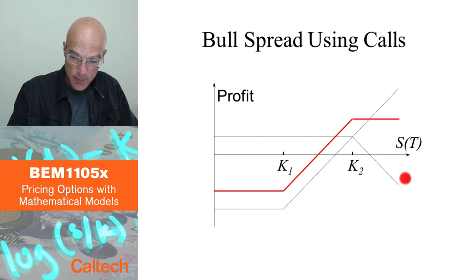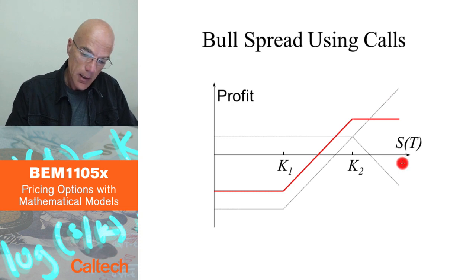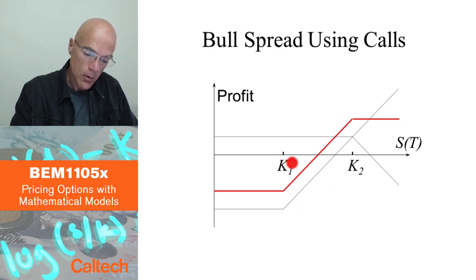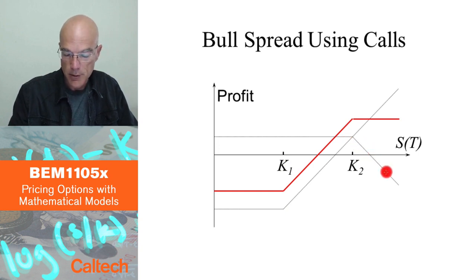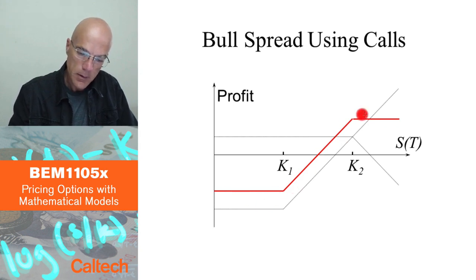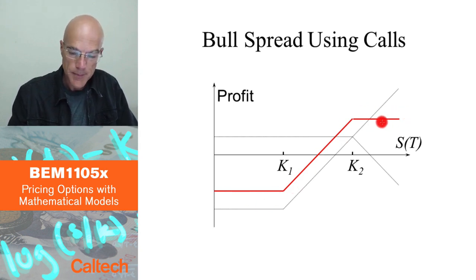If you look at the combination of the two, you can see by eye that the red line is the sum of these two gray lines. So by buying a call with strike price K1 and selling a call with strike price K2 on the same asset and same maturity T, this is the total profit/loss you would have — negative on the left, then positive and limited on the right.